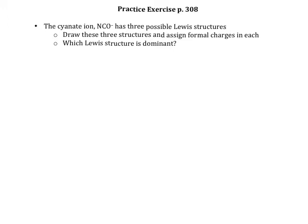The first thing we do every time we draw a Lewis structure is think about how many electrons we have to work with. You're going to look at the periodic table, figure out what group each atom is in, and that group number tells you how many valence electrons. Nitrogen brings five valence electrons, carbon brings four, oxygen brings six, and that negative charge means we have one extra valence electron. So we'll have a total of 16 valence electrons to use.